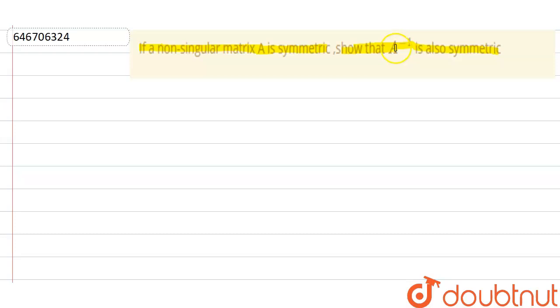Now see, we know the definition of symmetric matrix: that A transpose is equal to A. And since it is a non-singular matrix, it means the inverse of this matrix will exist because determinant of A is not equal to zero.